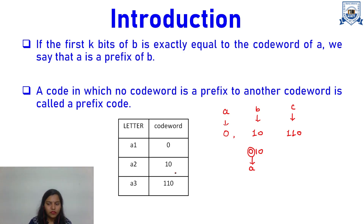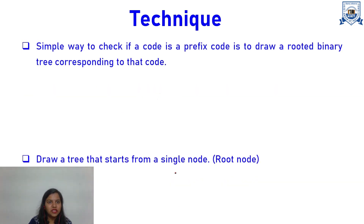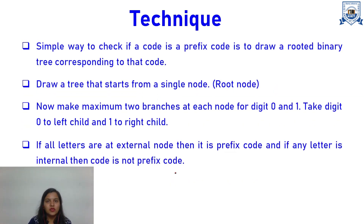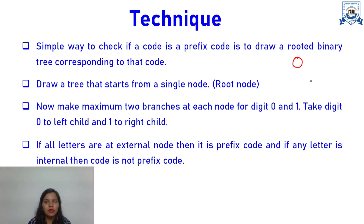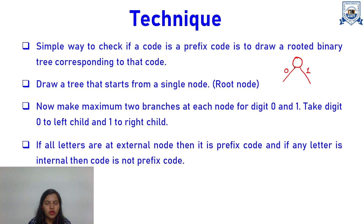If no code word is a prefix of another code word, only then we say that the particular code is a prefix code. To determine whether a given code is a prefix code or not, we make a tree. Every tree has a root node, so we start creating a tree with a single root node. Then it will have maximum two branches: the left child of this node will be for code 0, and the right child will be for code 1.